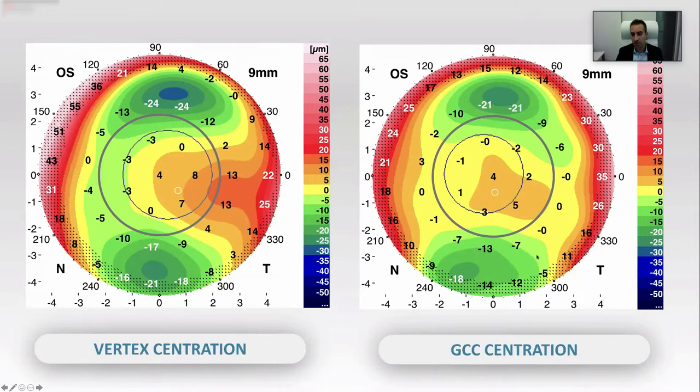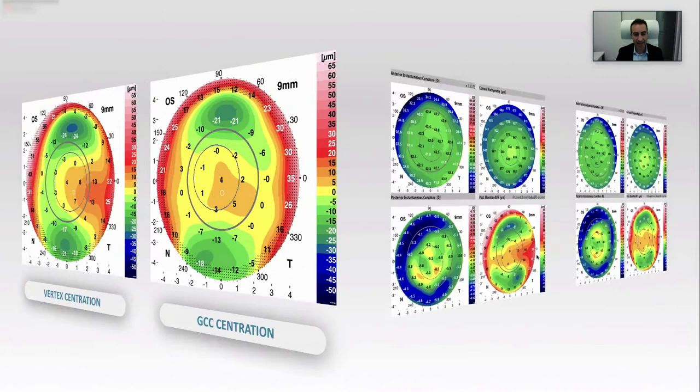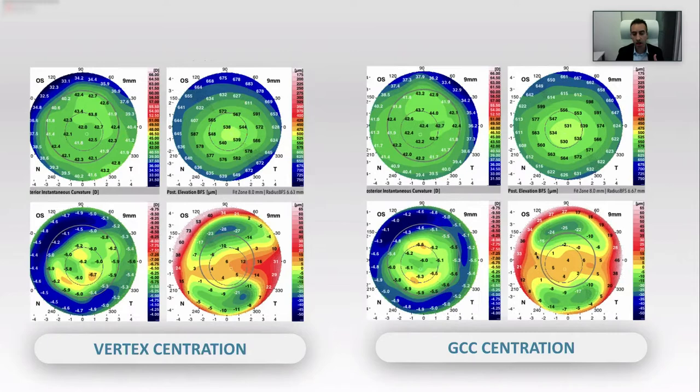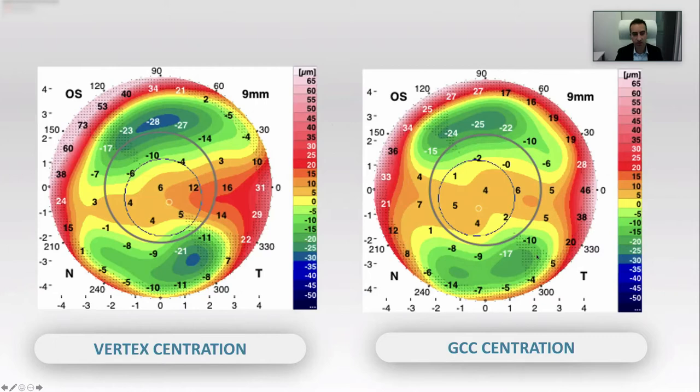Another example: a patient with elevation on the temporal side — is this keratoconus or a high angle alpha? If you re-center on the geometric center of the cornea, you get a perfectly nice BFS. Hence, I know this is not keratoconus — it is simply an artifact from the angle alpha. To represent that visually: when the visual axis coincides with the geometric center, the BFS looks very symmetrical. Move the visual axis slightly away from the geometric center, refit the BFS, and you see an artifactual increase from one side and a decrease from the other.